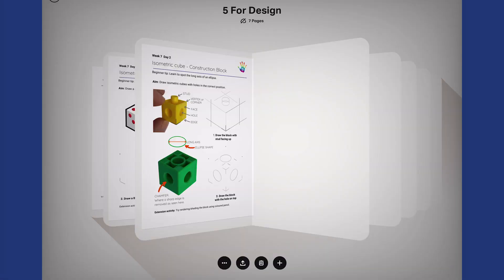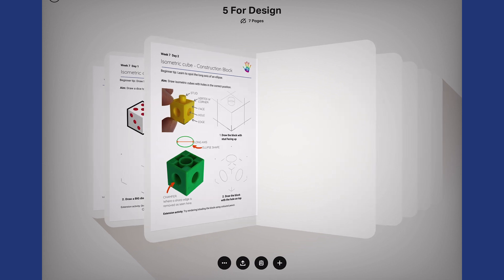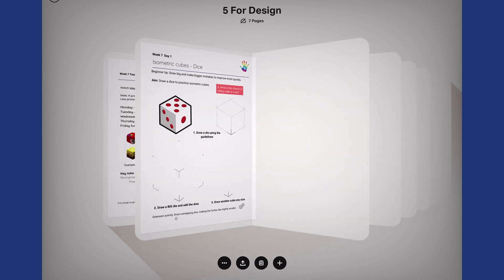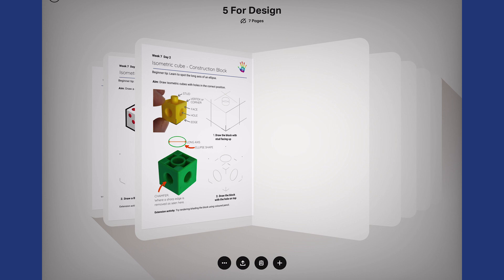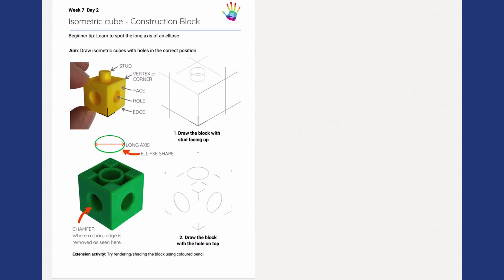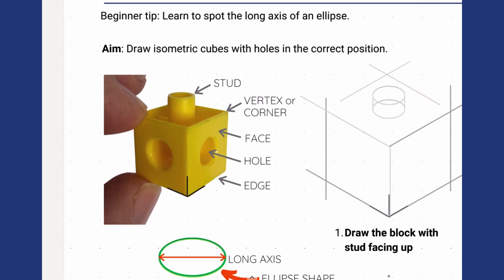Hi everyone and welcome to day two of week seven. Last lesson, we drew circles on a die. And today, we're drawing circles onto a construction block. First, let's learn the names of the parts of a construction block. Firstly, on top and lips here can become a cylinder and it's called a stud because it clicks together onto the next one.